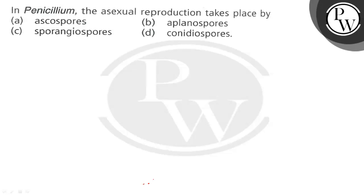Let's read the question. The question states: in Penicillium the asexual reproduction takes place by ascospores, aplanospores, sporangiospores, or conidiospores. The question is asking about Penicillium.